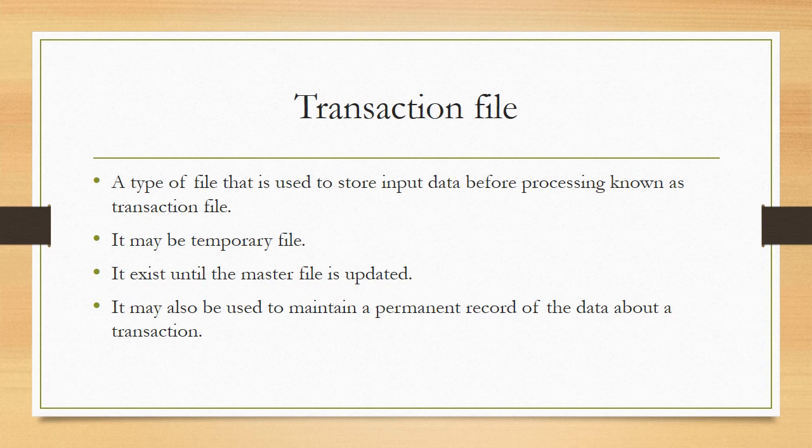Data-related details which you are providing as input within the processing cycle — all the details are stored in this file. The transaction file is used as a temporary file. Why is it temporary? Because when your transaction is completed and processing is completed, the data is converted into useful information or output, then that file is finished and you can delete it. Transaction files exist until the master file is updated.